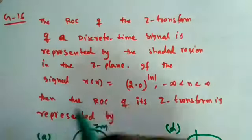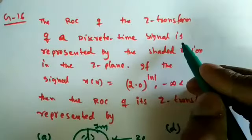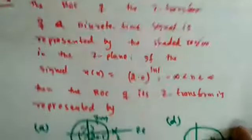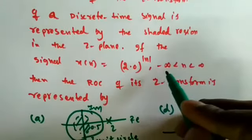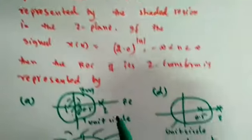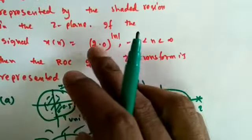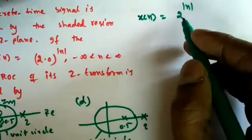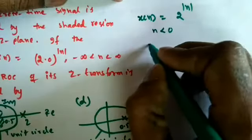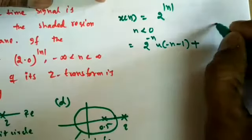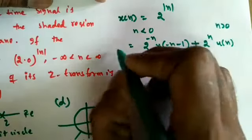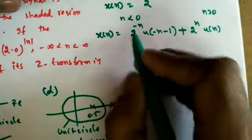Next GATE 2016 question on ROC. The ROC of the Z-transform of a discrete-time signal is represented by a shaded region in the Z-plane. Given x(n) = 2^|n| for n from −∞ to ∞, we need to identify the ROC from the options. We split: for n < 0, the signal becomes 2^(−n)·u(−n), and for n ≥ 0, it is 2^n·u(n).